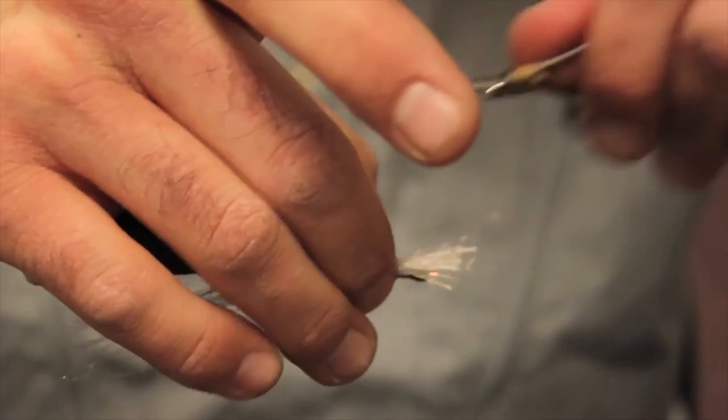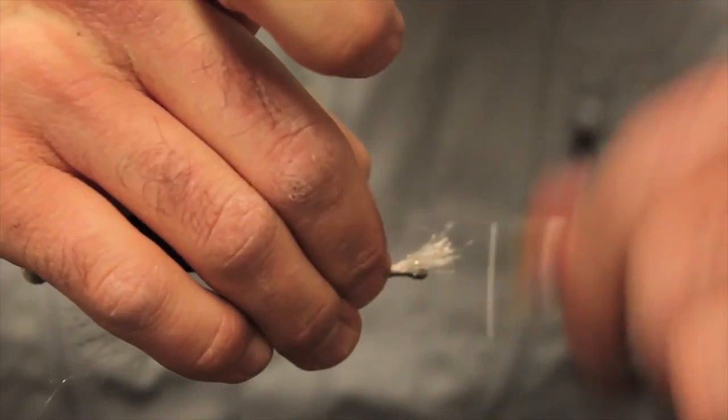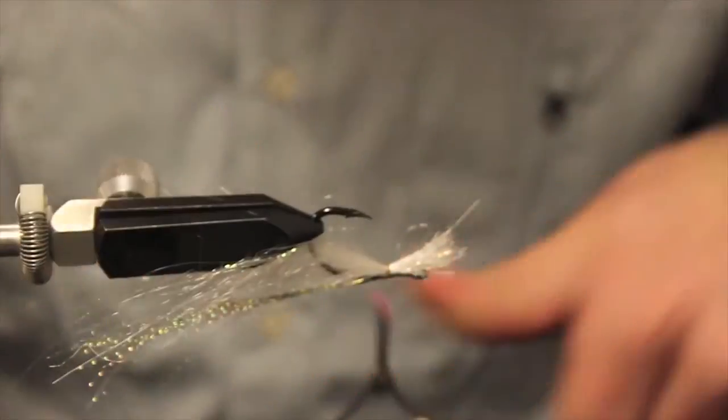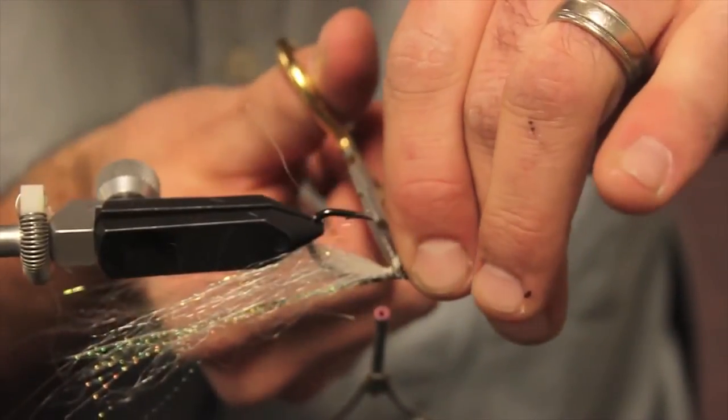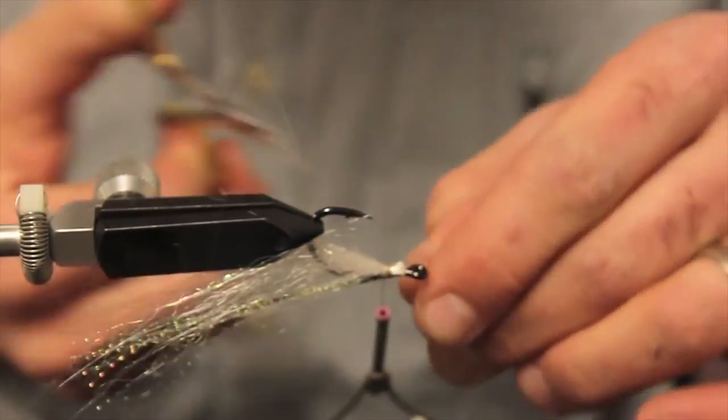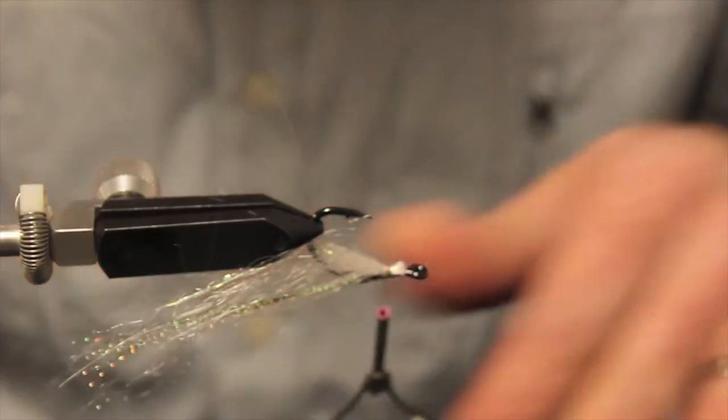Go ahead and tie it in. Try to keep it on the bottom of the hook so it doesn't spin around the hook. Trim.